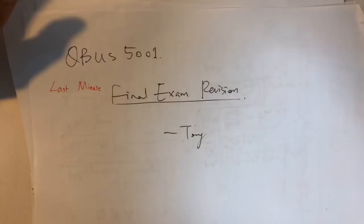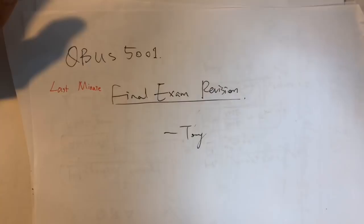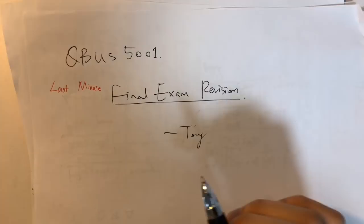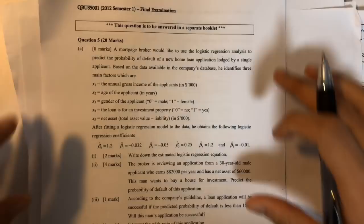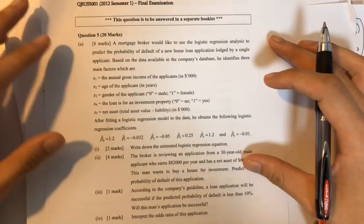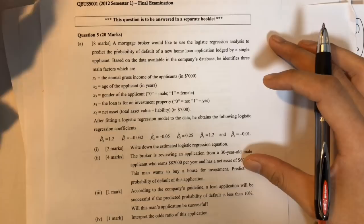If you refresh the page, you will see everything very clearly. Some students are asking how to interpret the odds ratio, so what I'm planning to do is show a logistic regression question here and try to help you guys understand. Oh, it's stuck again — what's wrong?